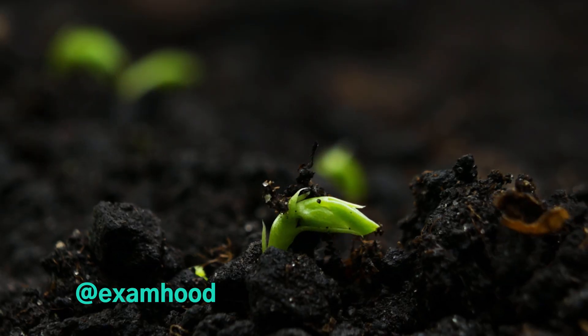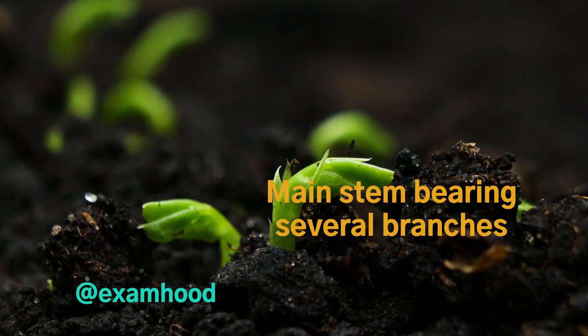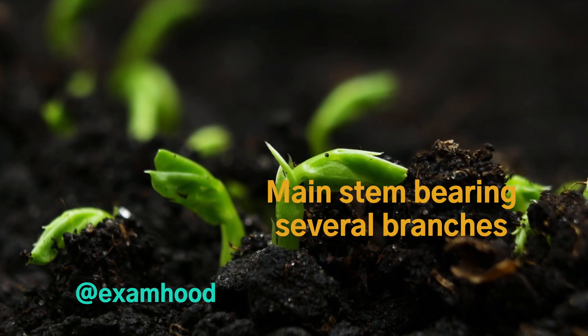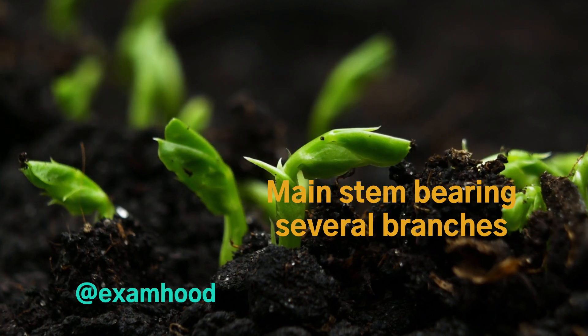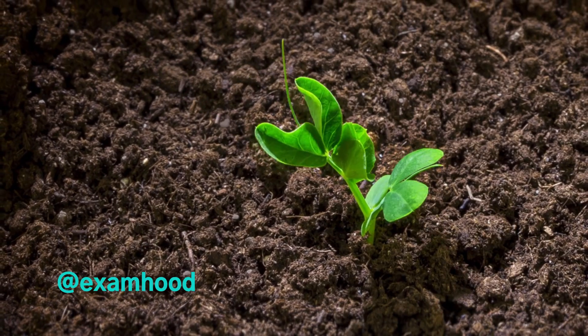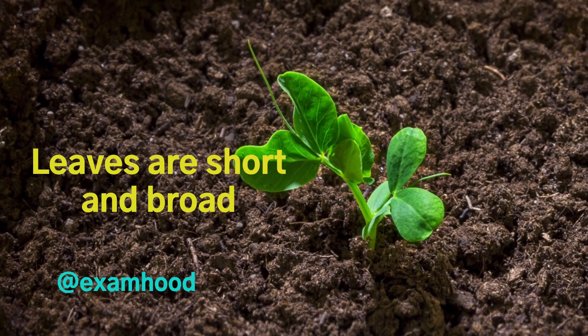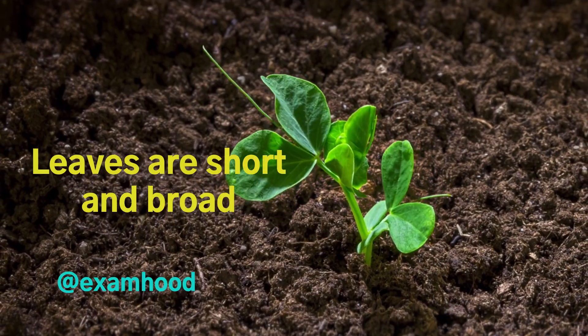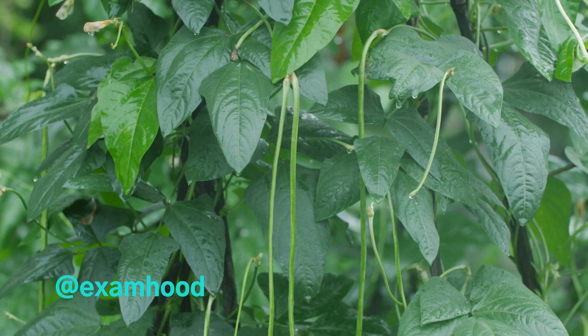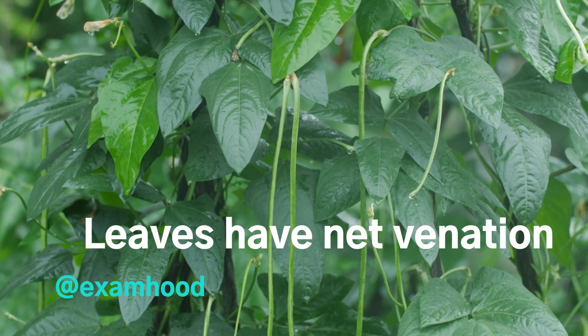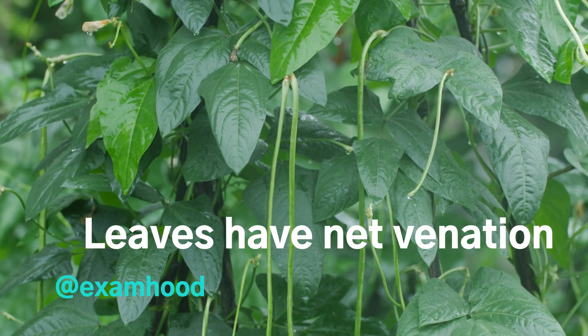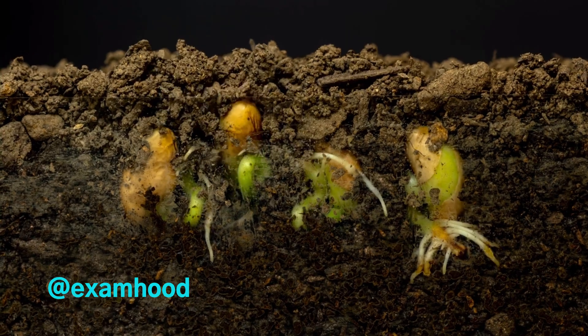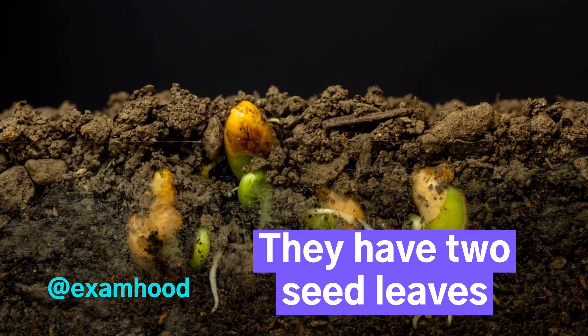Characteristics of dicot plants: They have a taproot. They have a main stem bearing several branches. Their leaves are short and broad. Leaves have net venation. They have two seed leaves.